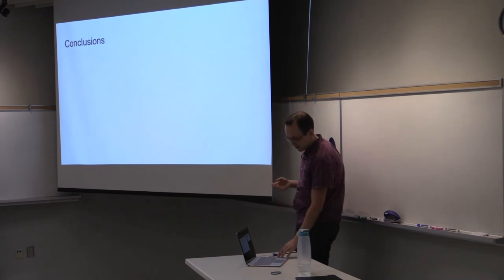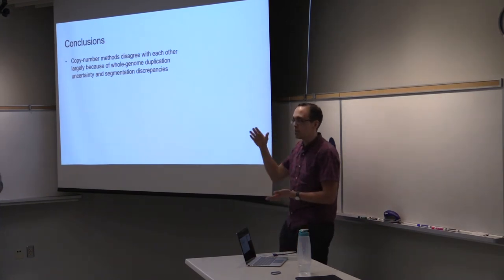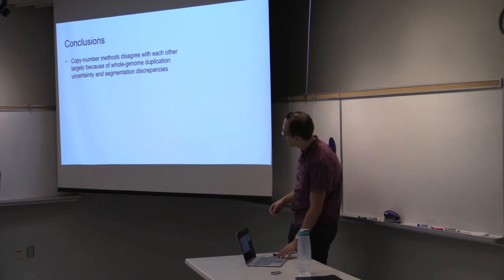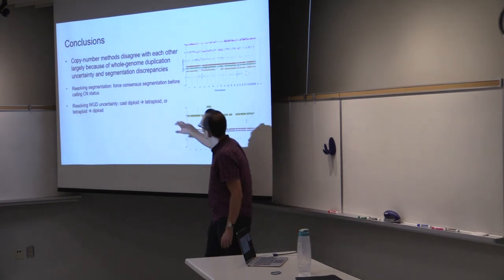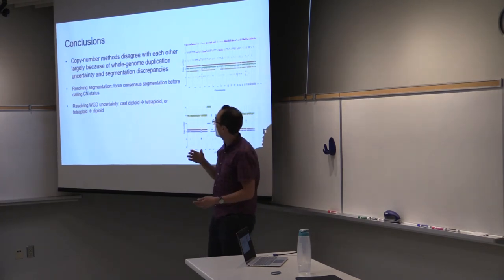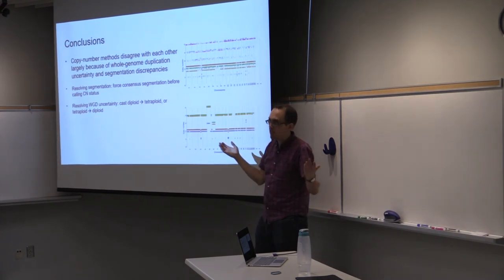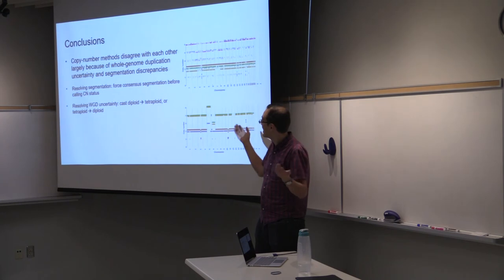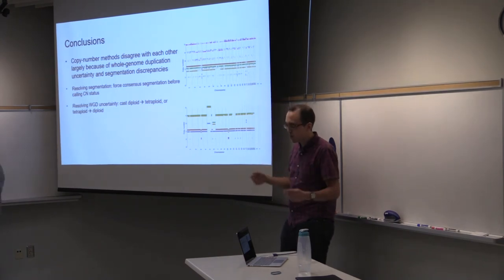The caveat that emerges from all of this is that you need a consensus strategy. I hope I've convinced you that most of the disagreement between our six copy number caller methods arises because of differences in whole genome duplication and in how they segment. The way we resolve the segmentation issue is we force the consensus segmentation that you can then work on. The way we resolve the whole genome duplication problem is we figure out ways to cast a diploid solution to tetraploid or tetraploid to diploid. At the end of the day, you have a lot of researchers sitting here trying to read the signals and understand exactly what the right answer should be. There's not yet a really principled good way to do it, but we're working on that.